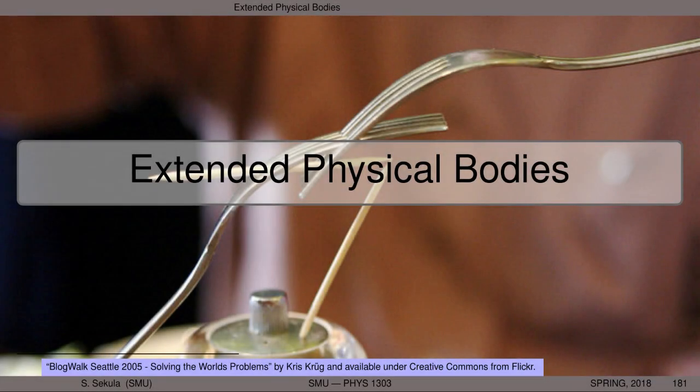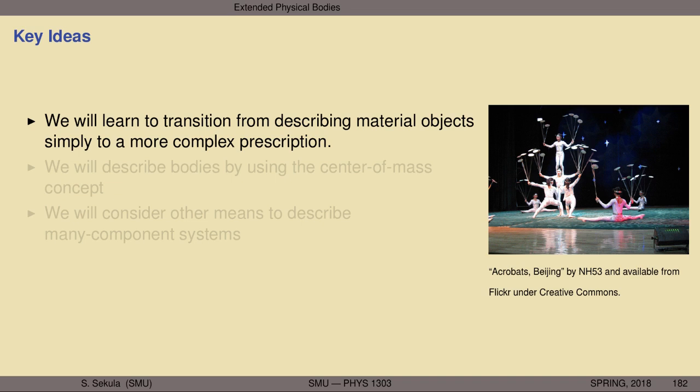Let's begin to build an understanding of how one will handle extended physical bodies or systems of particles that together can be considered one thing, in the context of the principles and laws of physics explored so far in the course. We're going to learn to transition from describing material objects in a very simplistic way to a bit more of a complex prescription — from single dots or particles representing complex systems to other things that still represent complex systems, but allow for evolving complexity to be considered.